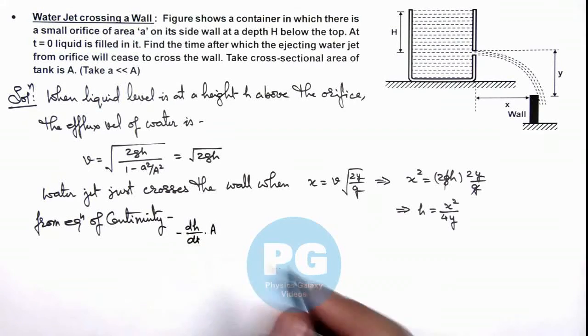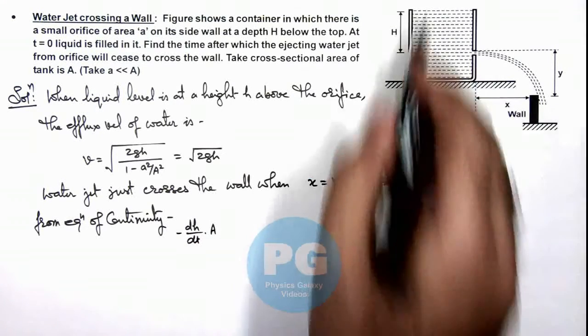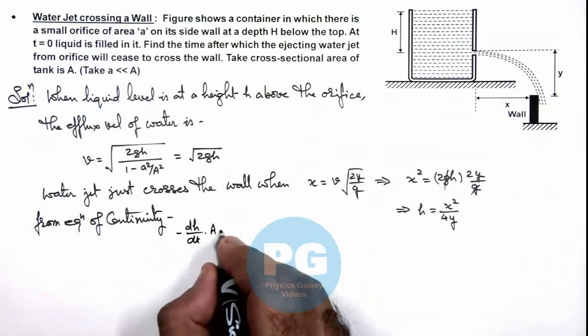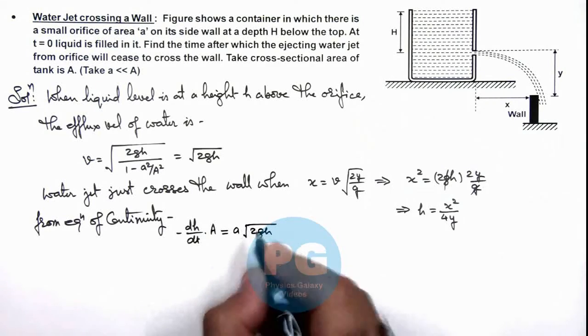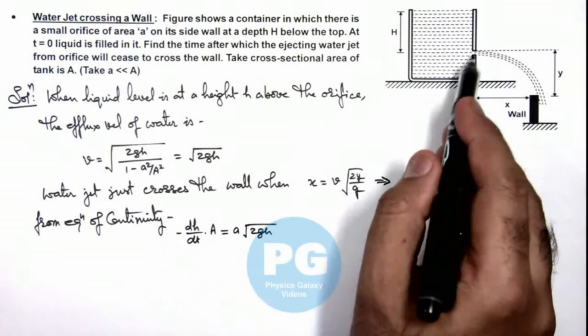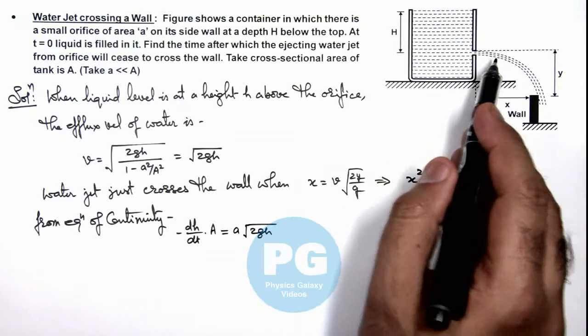And this should be minus dh/dt as h is decreasing, should be equal to small a multiplied by root(2gh). This is the flow rate at which the water is coming out from the orifice.